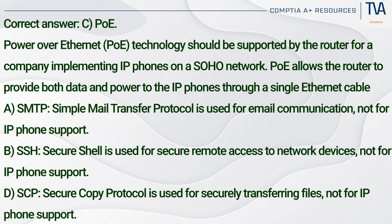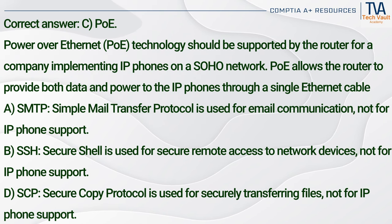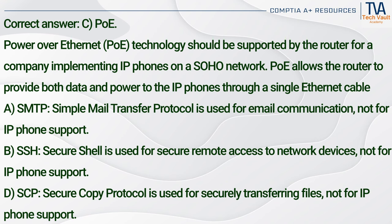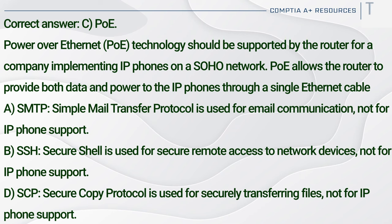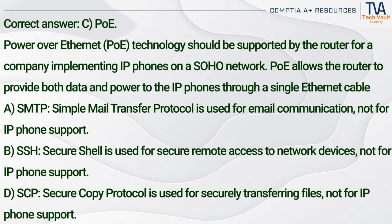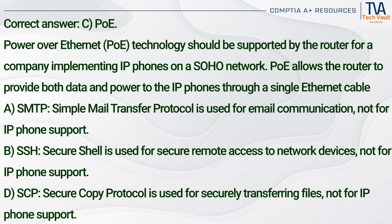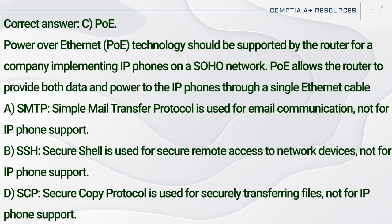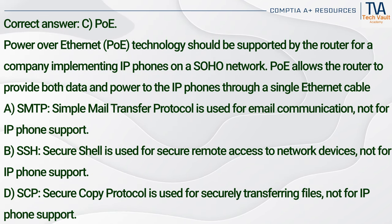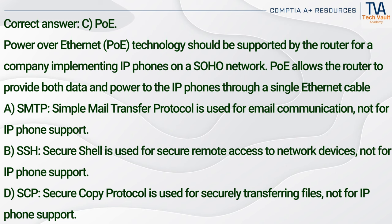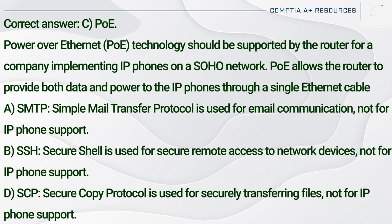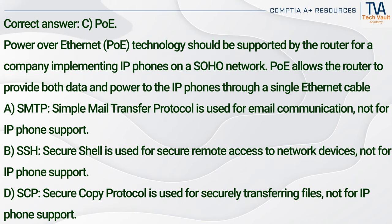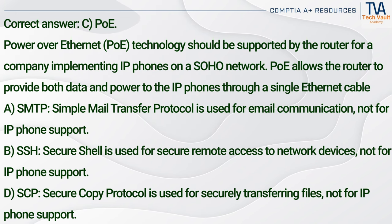Correct answer: C. PoE. Power over Ethernet (PoE) technology should be supported by the router for a company implementing IP phones on a SOHO network. PoE allows the router to provide both data and power to the IP phones through a single Ethernet cable. SMTP (A) is used for email communication, not IP phone support. SSH (B) is used for secure remote access to network devices, not IP phone support. SCP (D) — Secure Copy Protocol — is used for securely transferring files, not IP phone support.